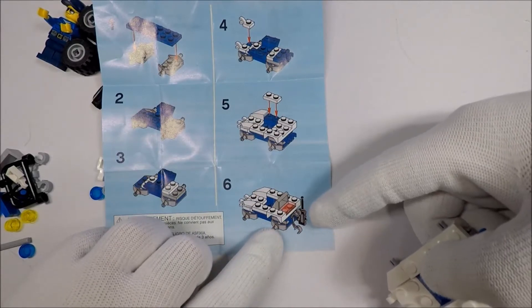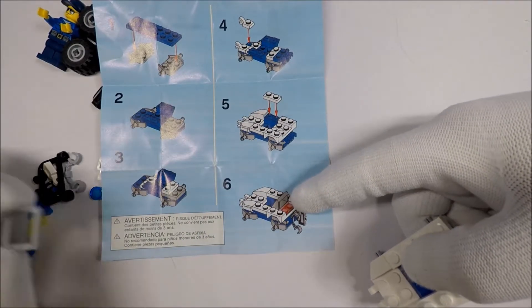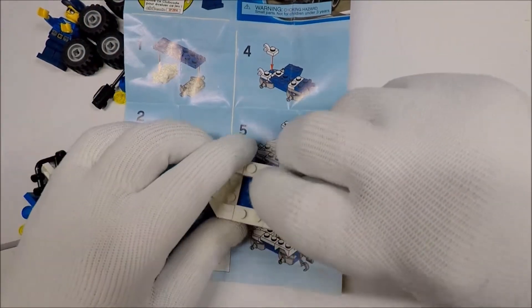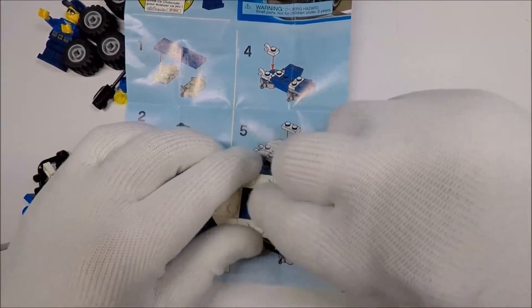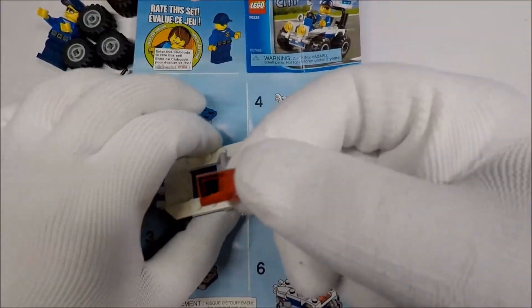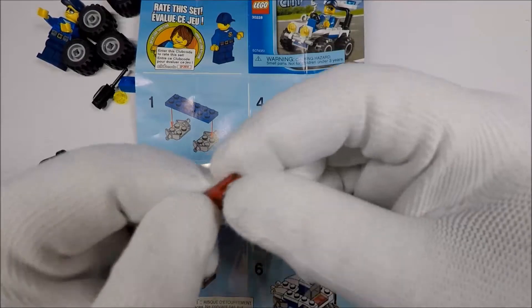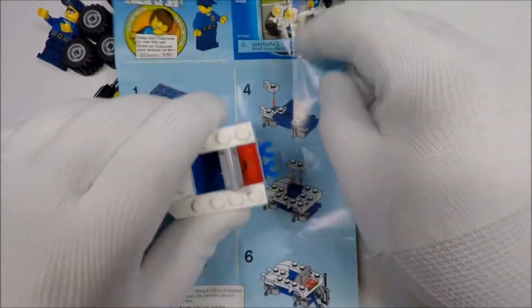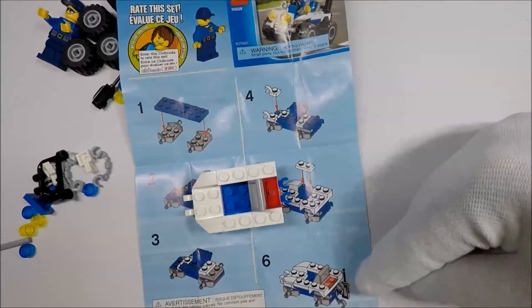And then we have a little roll bar-looking thing. That's another one that I like the color of. I like the dark trans-red.